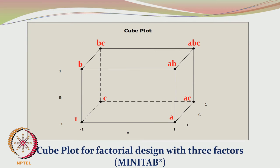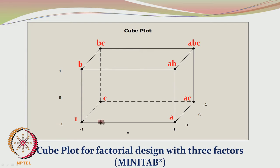Now let us look at factorial design involving 3 factors. Since there are 3 factors, the design becomes 2³, with 2 levels (−1 and +1) for each of the 3 factors, giving 8 experiments. These 8 runs may be represented as the corners of a cube. Treatment 1 means all A, B, and C are at their lower levels. The bottom base of the cube represents a 2² design involving factors A and C.